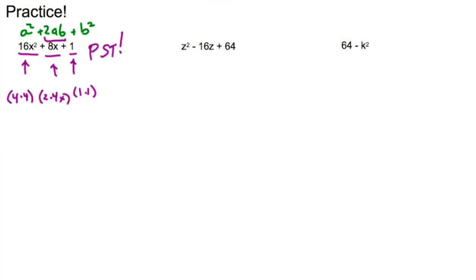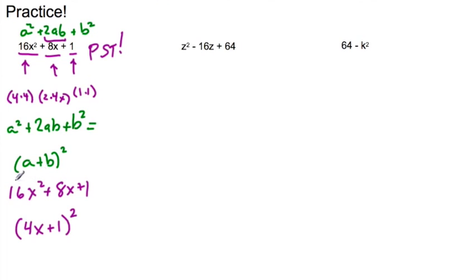So I know that this is a perfect square trinomial. Because it's a perfect square trinomial, I can go ahead and go back to the format a² + 2ab + b². And I know that it's a perfect square trinomial in expanded form. So my factored form is going to be (a + b)². Going back to 16x² + 8x + 1, I can see that my answer is going to be (4x + 1)².